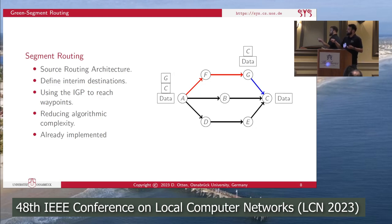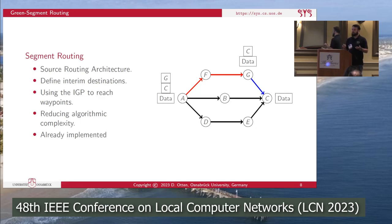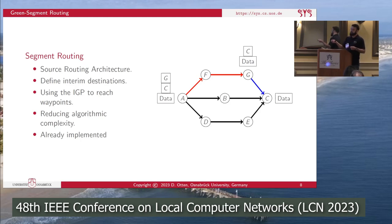With this method, we cannot use every possible path in the network. We can only use paths that are the concatenation of two shortest paths. On one hand this reduces the algorithmic complexity; on the other hand, we can rely on an already implemented method.